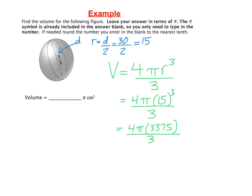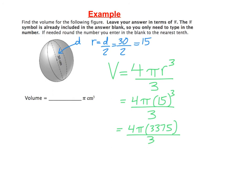I'm going to zoom out here a little bit. And now I'm going to multiply those two numbers on the top, the 4 times the 3,375. And when we do that, we get 13,500 pi. And then that whole thing is divided by 3.